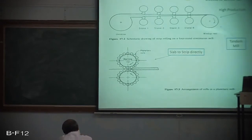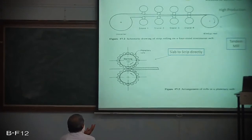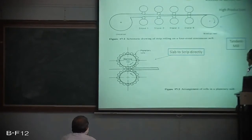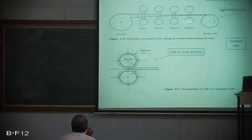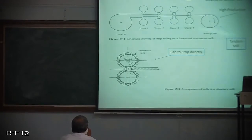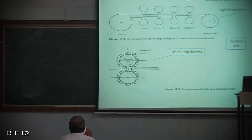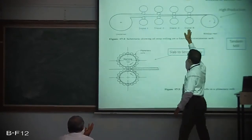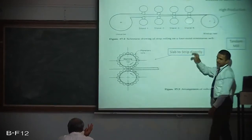A tandem mill consists of multiple stands — for example, 4 stands — through which the work metal constantly passes. Each set of rolls is called a stand, and at each stand the thickness of the workpiece is reduced to a certain extent. Reduction in strip size takes place successively and rolling is completed in a single continuous pass. You can see the cross section is greatly reduced with multiple passes through stands 1, 2, 3, and 4.